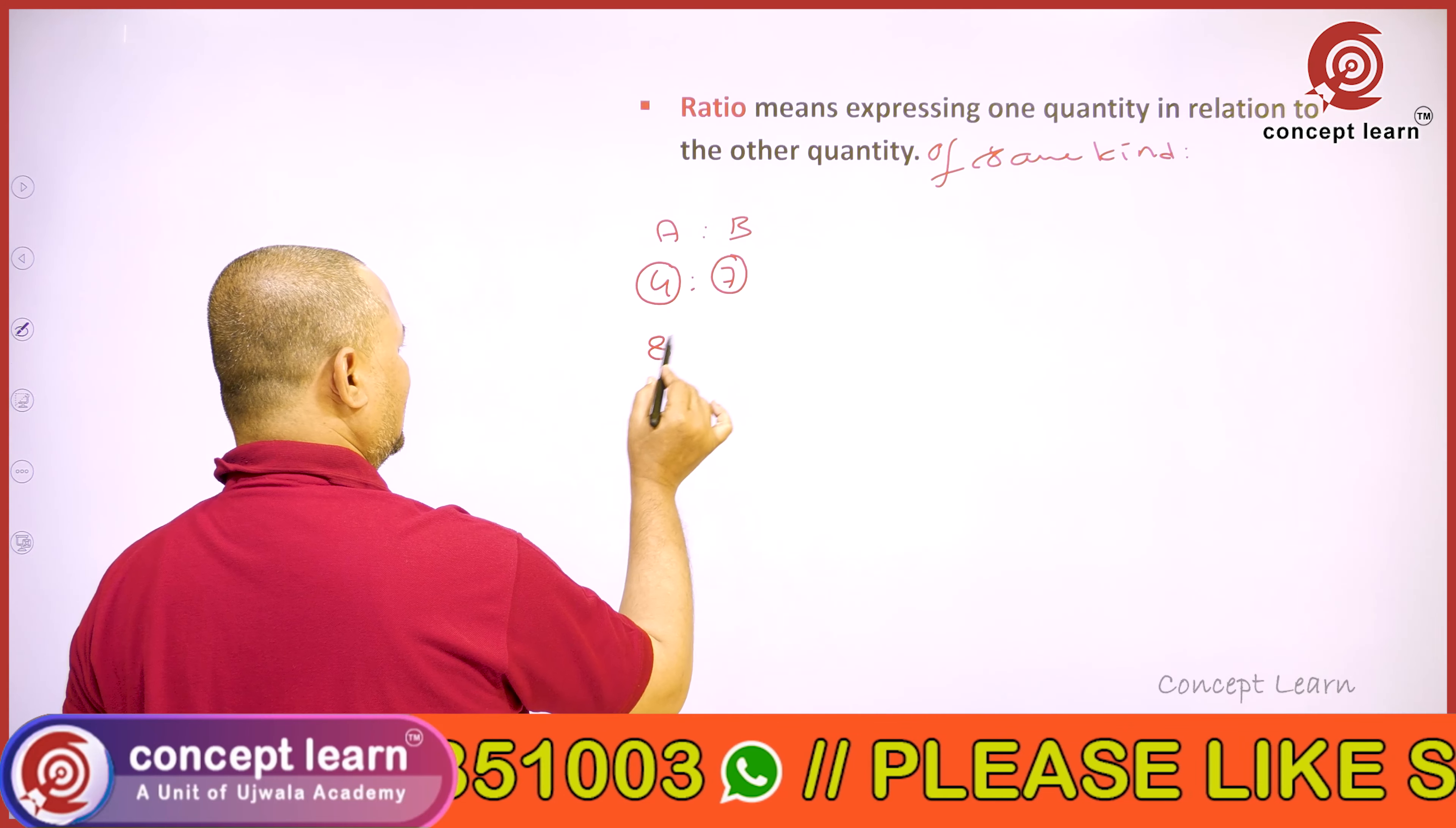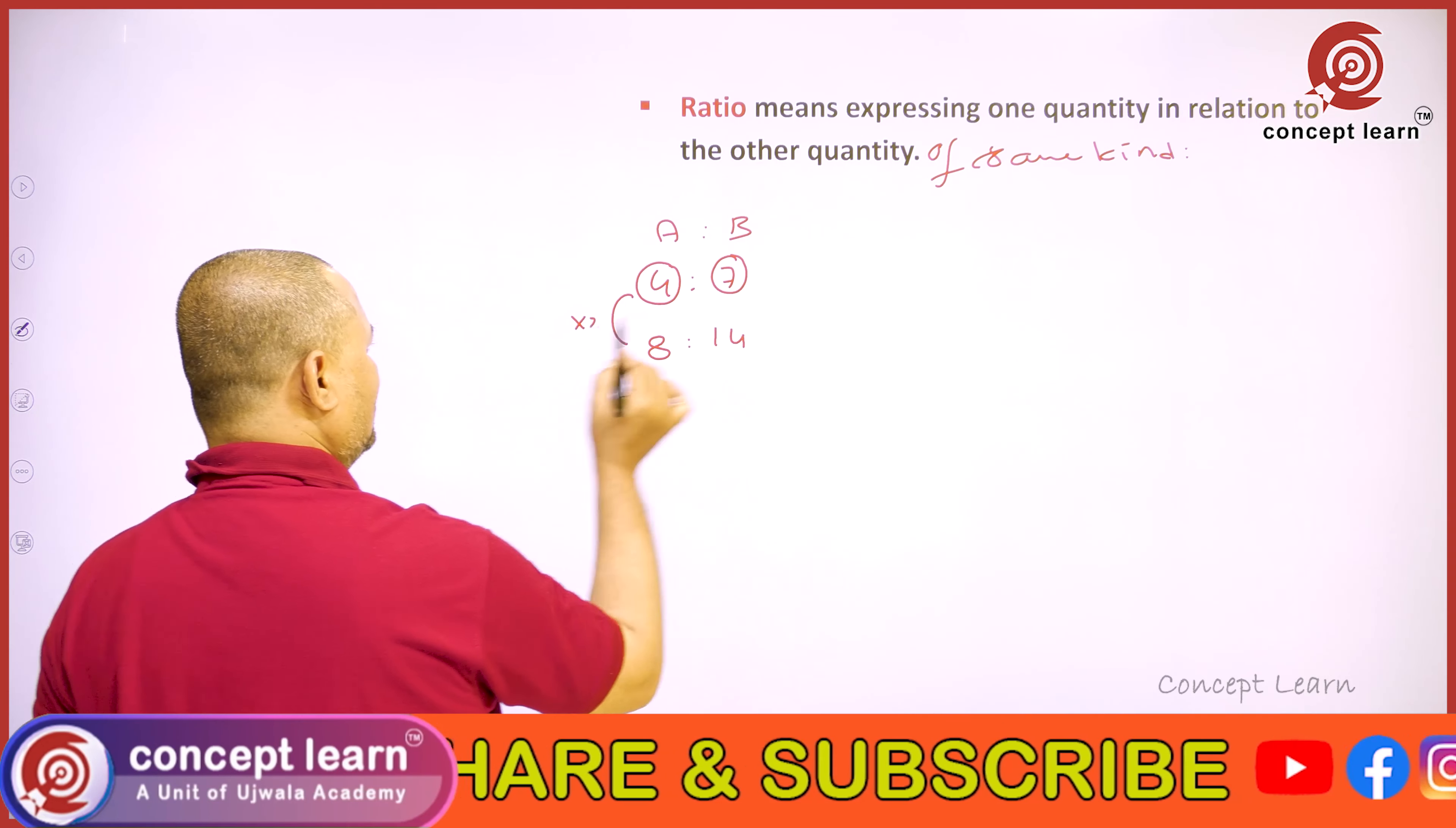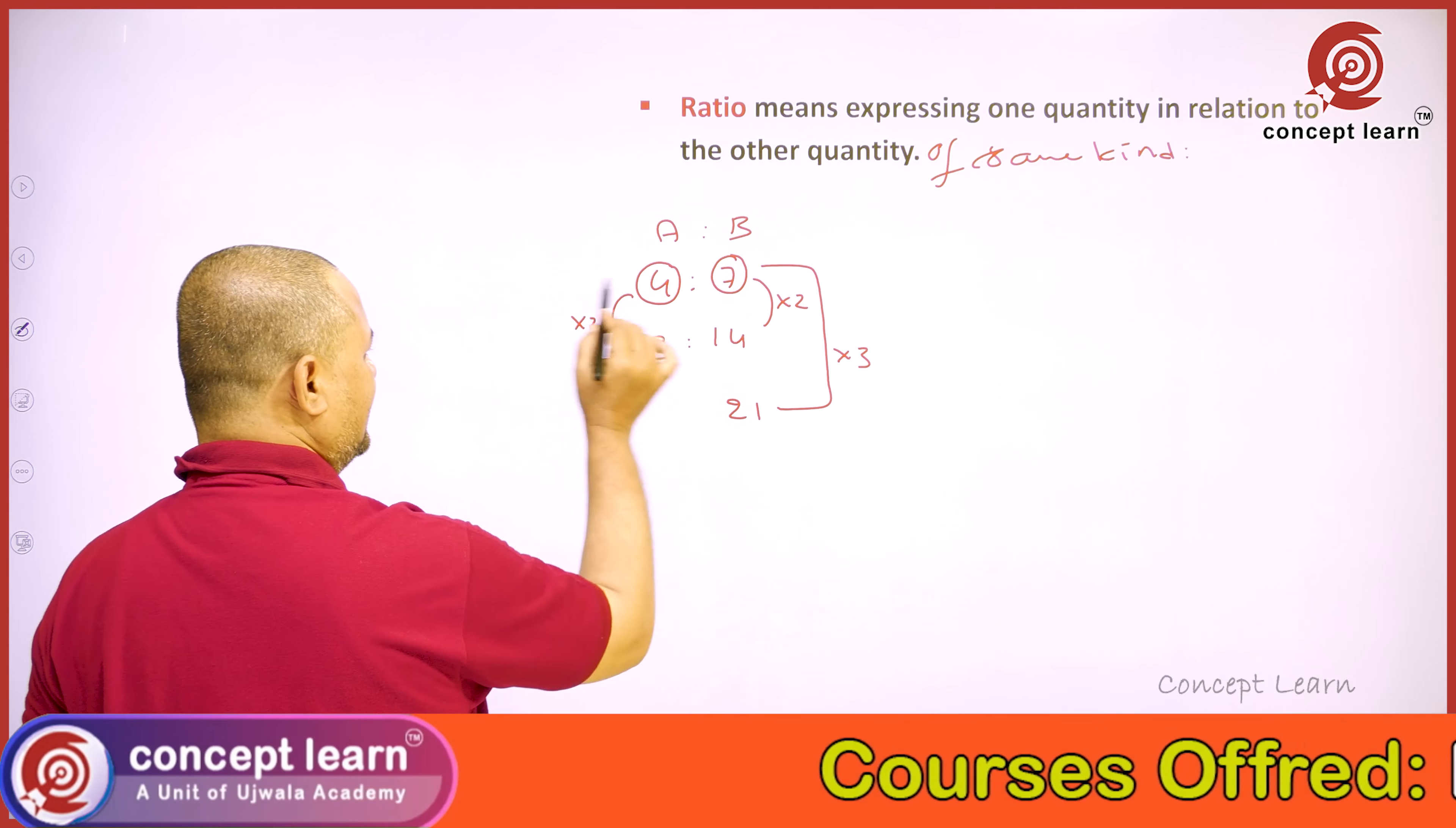If A has 8 parts, B equals 14 parts. What does it mean? Because if A is double, B is double. If A is triple, B is triple.